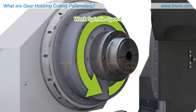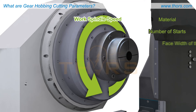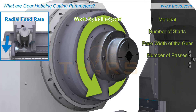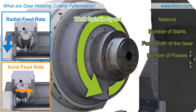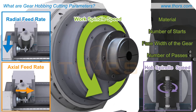The work spindle speed is the rate at which the work spindle turns the work piece. The required work spindle speed will vary based on factors such as the material, the number of starts on the hob, the face width of the gear, the number of passes, and the radial feed rate that controls the depth of the gear tooth. Other determining factors include the axial feed rate and hob spindle speed, or the rotational rate at which the hob spins.